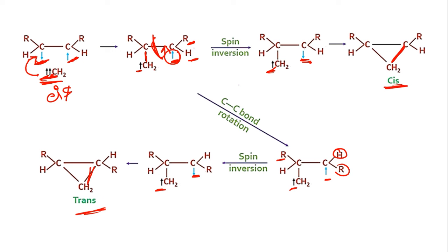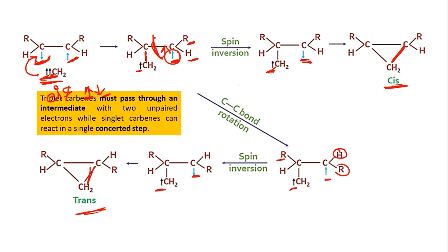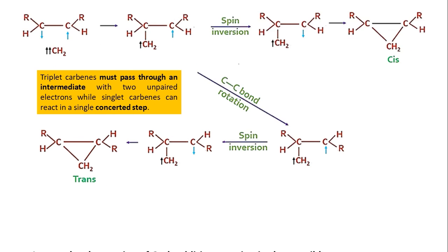This type of mechanism with CC bond rotation is not required for singlet methylene, because in singlet methylene the two electrons are already of opposite direction, so one electron matches with the left-hand side pi electron and the other matches simultaneously — it is a concerted mechanism. We can now say that triplet carbenes must pass through an intermediate with two unpaired electrons of the same spin. This intermediate is not obtained with singlet carbene because singlet carbene proceeds by a concerted mechanism without such an intermediate.